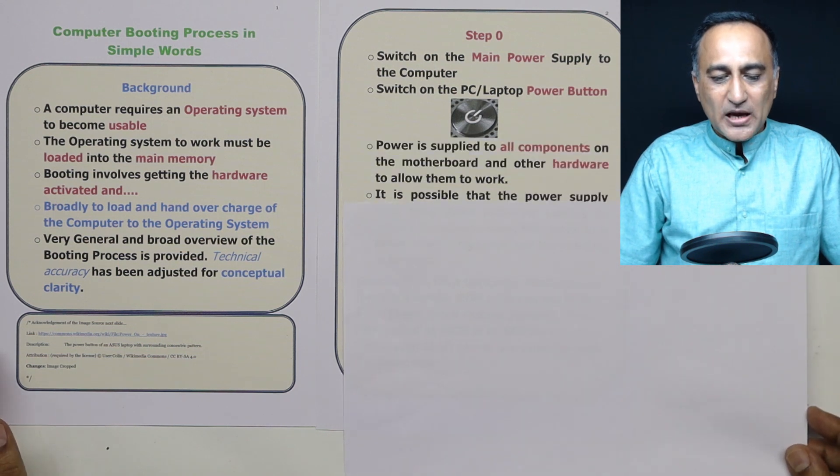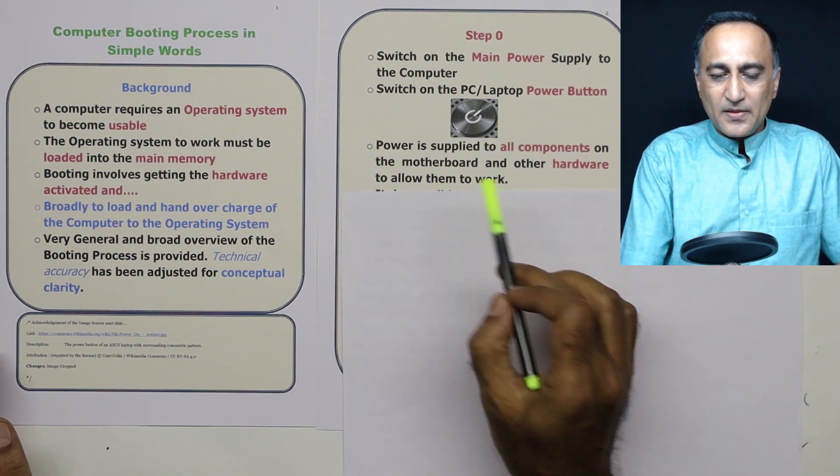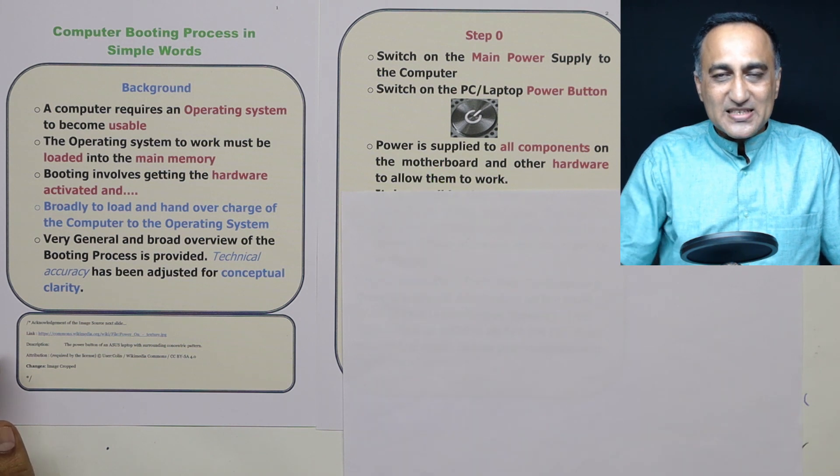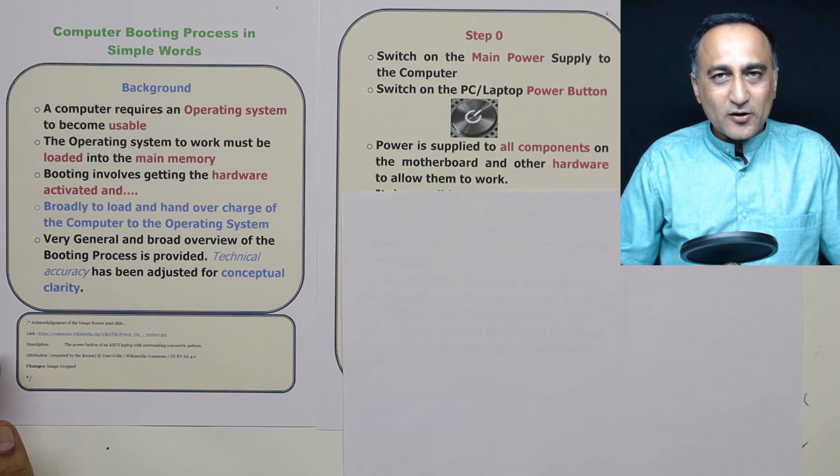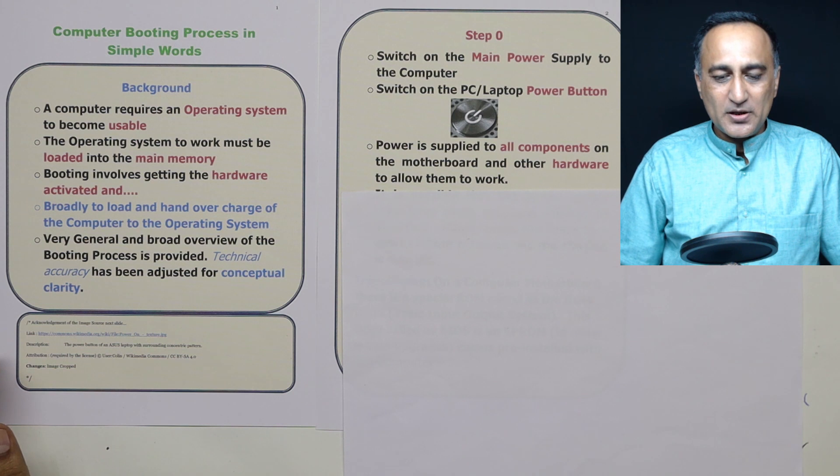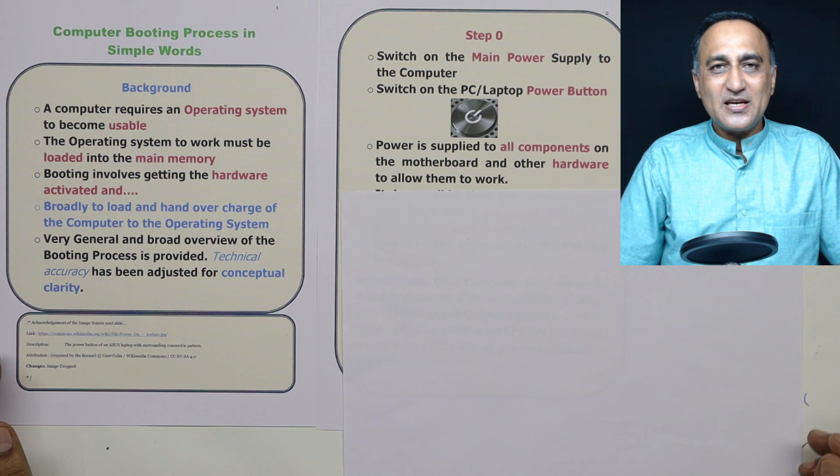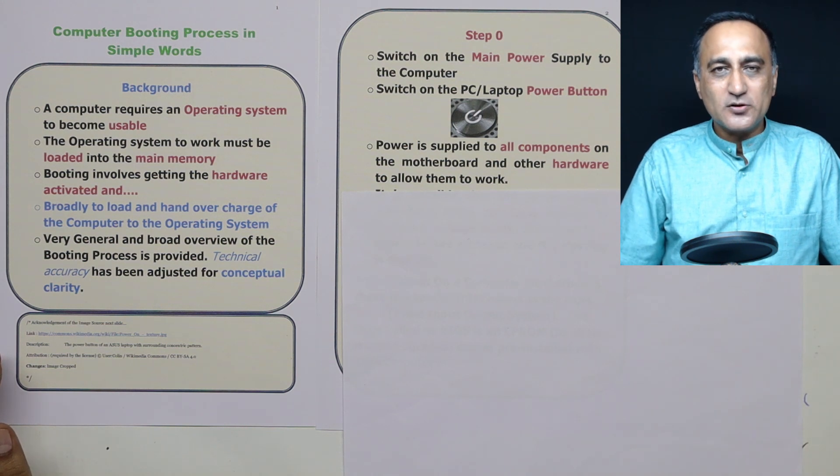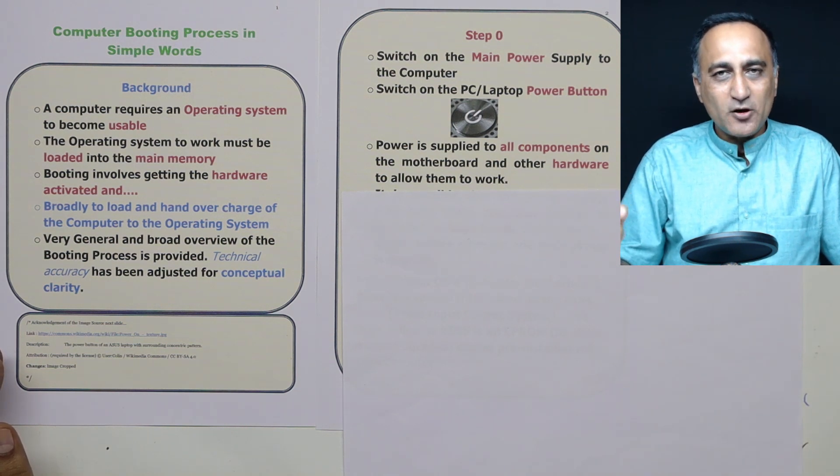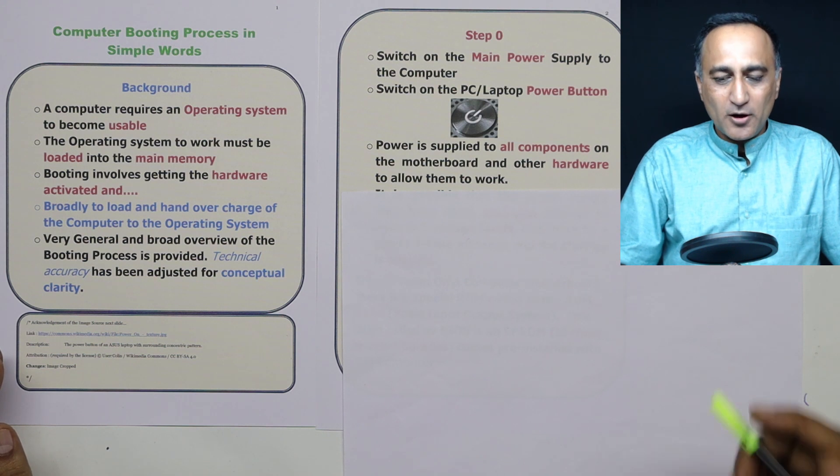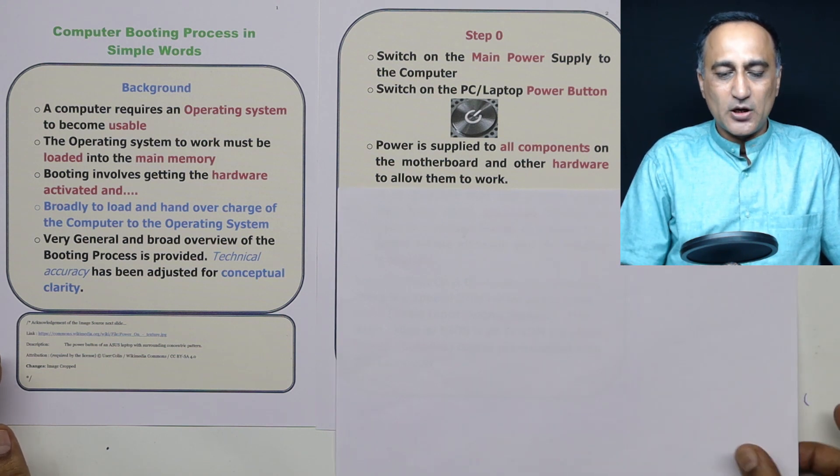The first step what happens after the power is switched on is the power is supplied to all the electronic and electromechanical components on the motherboard, as well as the other hardware devices, because without power they cannot work. So first power is supplied to every component on the motherboard, followed by all the other hardware devices to allow them to work.